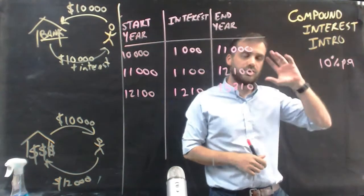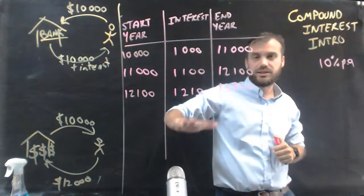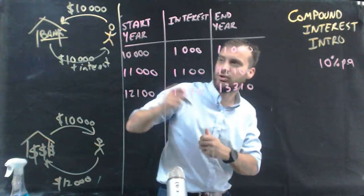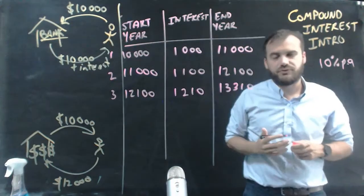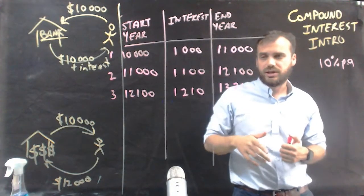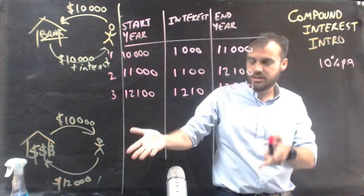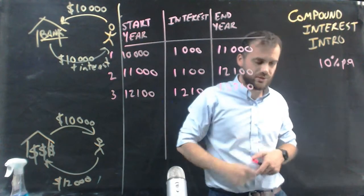All right. So that's compound interest. That's an introduction to it. Now, you don't always have to fill out a table like this. I could probably put one more column on here: year one, year two, year three. We'll come up with a formula for calculating it. Because if I had my money in there for 20 years, I don't want to have to do 20 rows. We can come up with a faster way to do this.